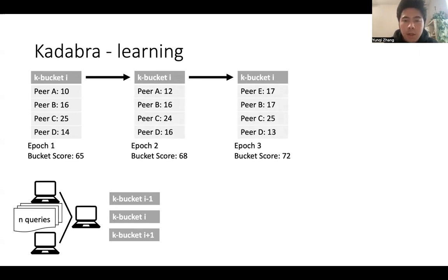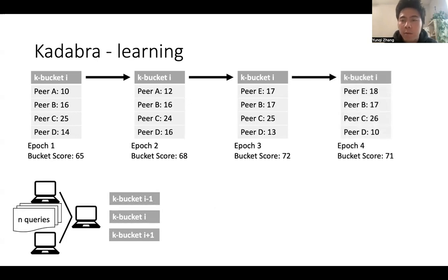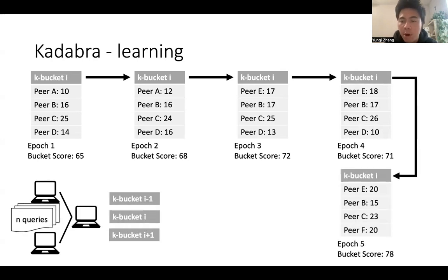And after the third epoch, we have a new bucket score. Then, after n queries, we are at epoch 4. Epoch 4 is an exploitation epoch. Similarly, after n queries, we are at epoch 5. Here again, we replace the worst performing peer from the previous epoch.